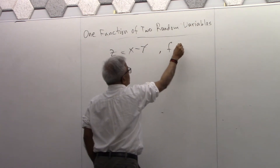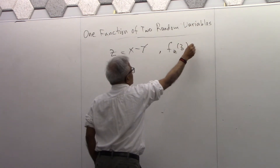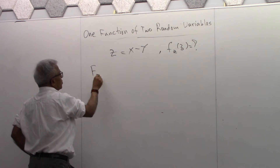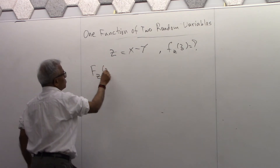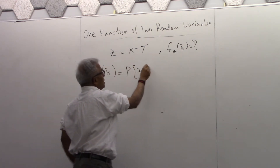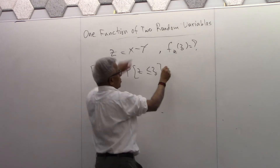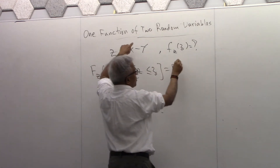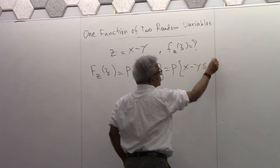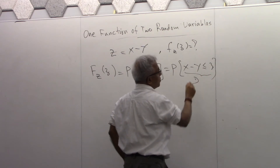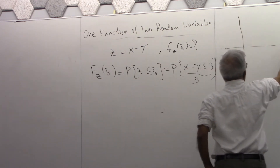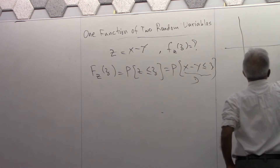Knowing the joint density function, find the density function of Z. Let's look at the distribution function of Z — that's the probability of Z less than or equal to z. Z is given to be X minus Y, so we need to find the region where this inequality is satisfied in the XY domain.